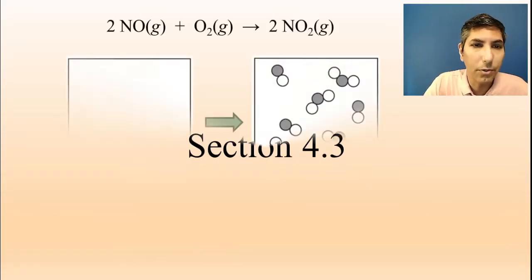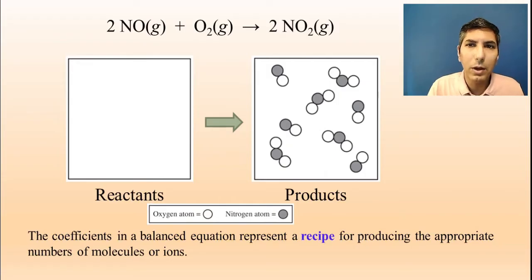Now Unit 4, Section 3 is about how we can portray chemical reactions in a graphical form or in a pictorial form. So we're going to try an example here and this is a fairly typical question that they might ask you on an exam like an AP exam.